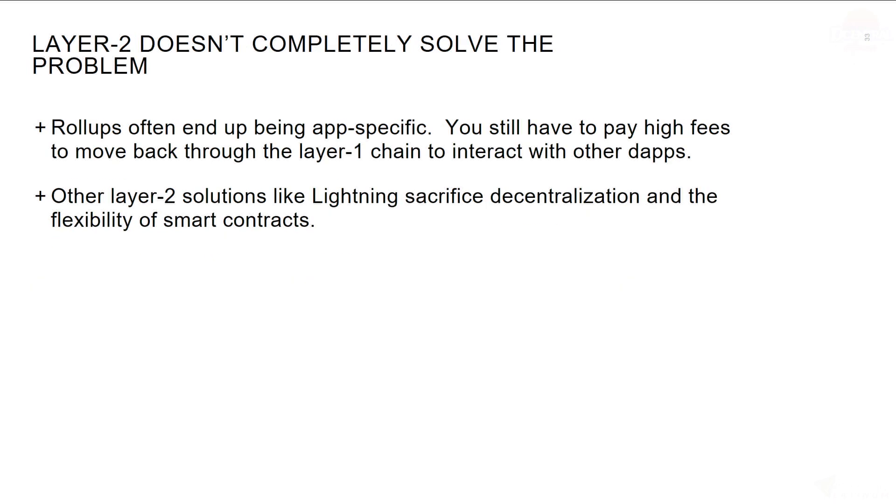Layer 2s are put out there as a scaling solution, but they don't actually solve the problem completely. Rollups often end up being app-specific. You still have to pay high fees to move back through the layer 1 chain to interact with other dApps. And other layer 2 solutions like Lightning sacrifice decentralization and the flexibility of smart contracts. Layer 2 has a place, but it is not a substitute for layer 1 scaling.